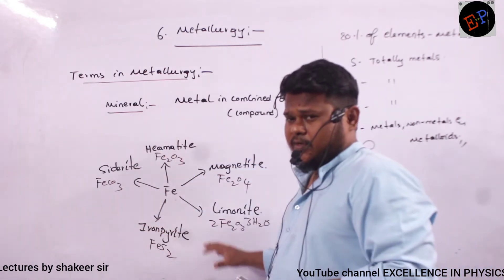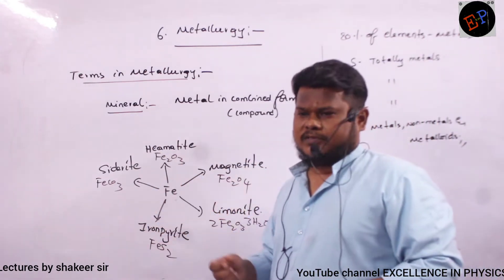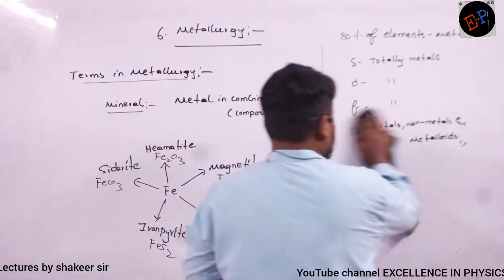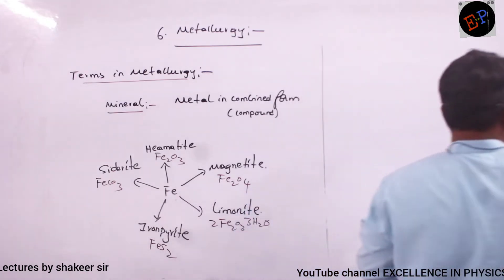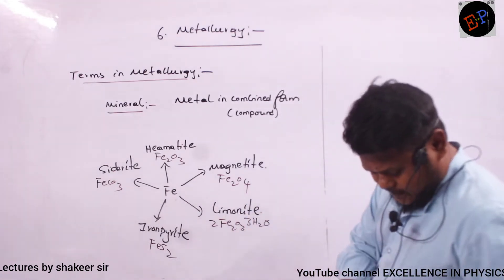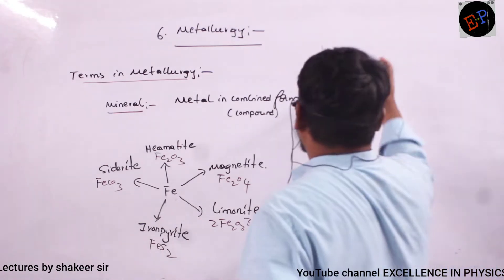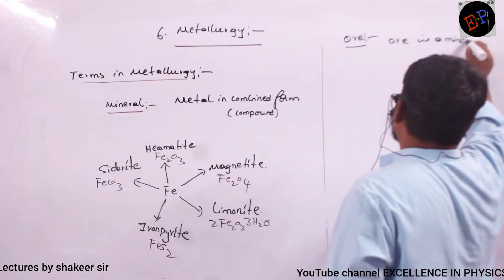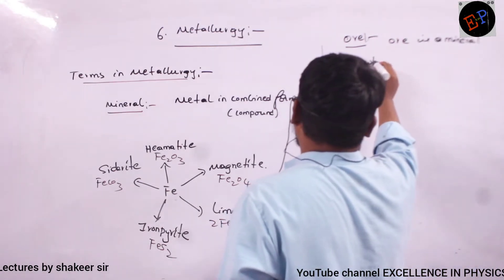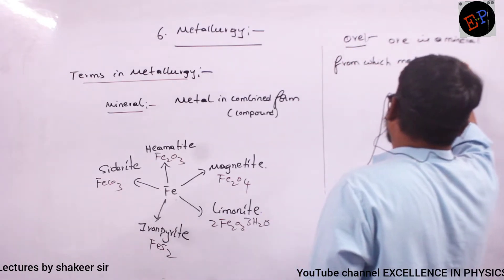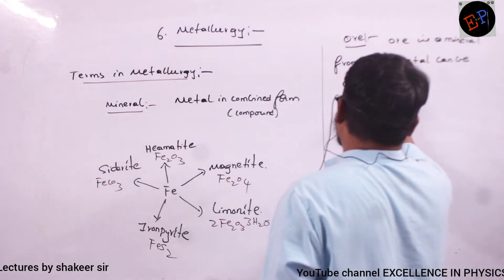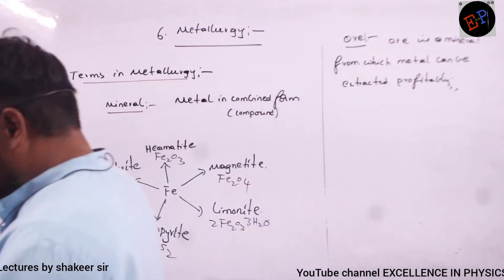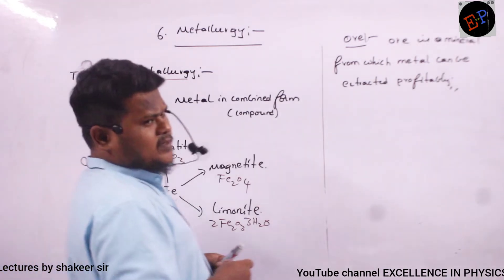The next term is ore. An ore is a mineral from which a metal can be extracted profitably. The difference between mineral and ore: in a mineral, the metal compound is simply present. But an ore is a mineral from which the metal can be extracted very easily and profitably — that means the effort put into extraction is minimal.